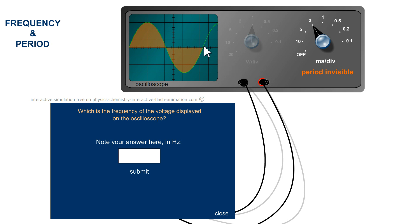8.33 times two gives a period of 16.66 milliseconds. But I'm looking for the frequency. Therefore, one divided by 16.66 times ten to the minus three seconds. The calculator gives me 60 hertz.